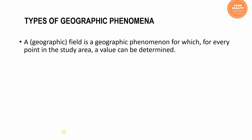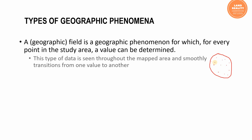Let's look at the types of geographic phenomena. One type is a geographic field — very important to note. In a geographic field, for every point in the study area a value can be determined, and that value is not necessarily the same across the area. This type of data is seen throughout the mapped area and smoothly transitions from one value to another.